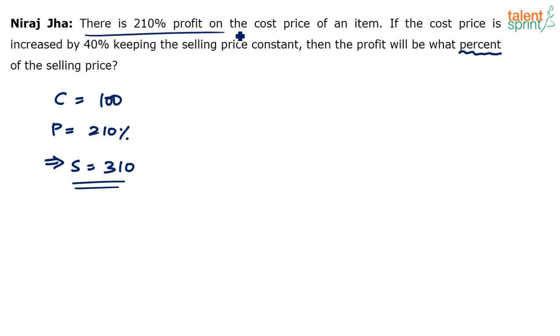This is the first statement, values according to the first statement. Then he says if the cost price is increased by 40%, what will be the new cost price? C dash, the cost price, will increase by 40%, so 100 plus 40% of 100, which gives you 140. The new cost price is 140.